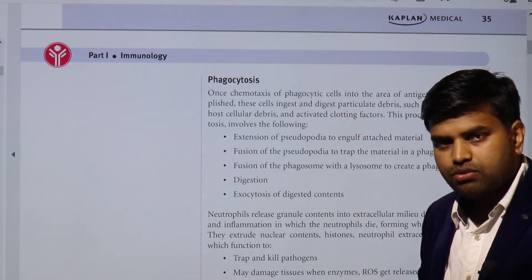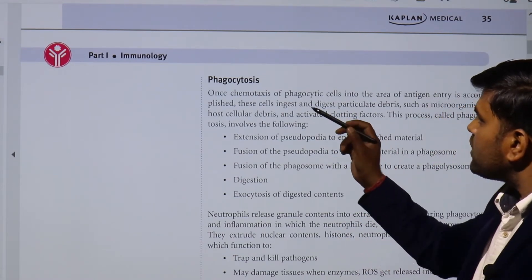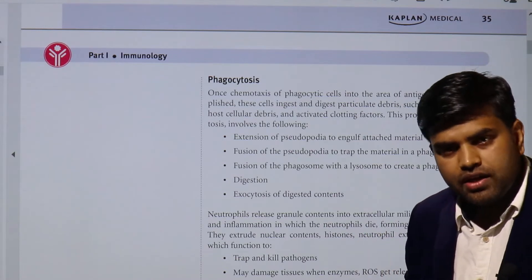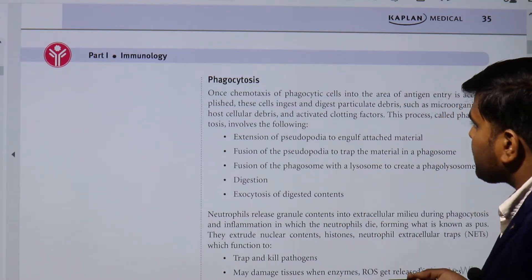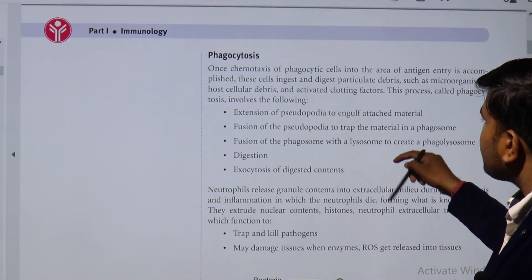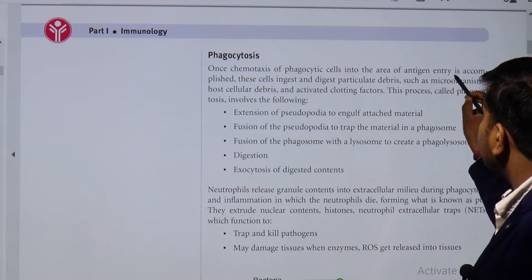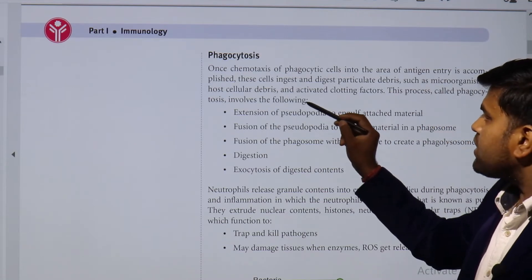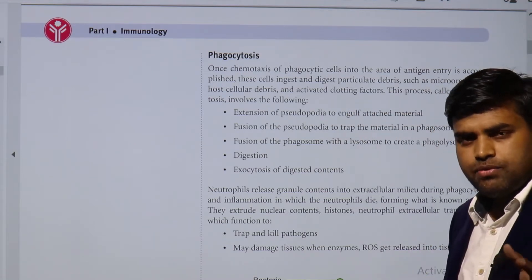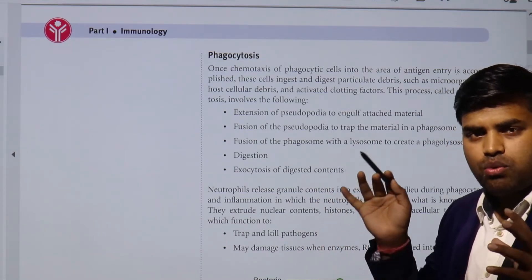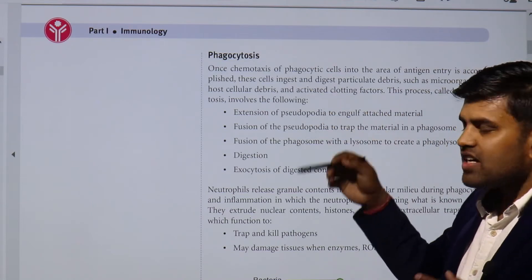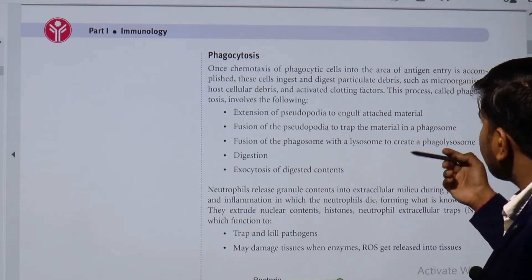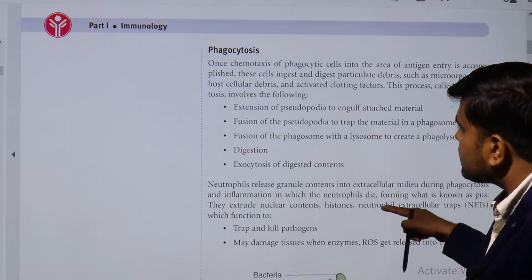Once chemotaxis of the phagocytic cell to the area of antigen or injury is accomplished, these cells ingest and digest particulate debris such as microorganisms, host cell debris, and activate clotting factors. This process by which bacteria present inside our body is killed by phagocytic cells — mainly neutrophils and macrophages — is called phagocytosis.